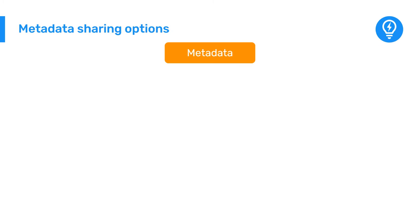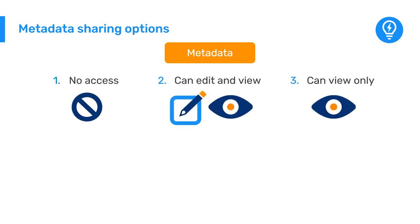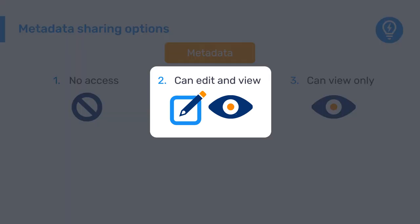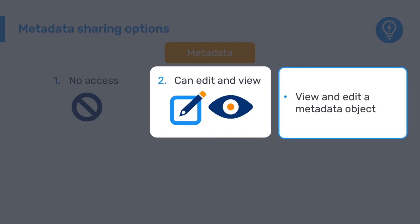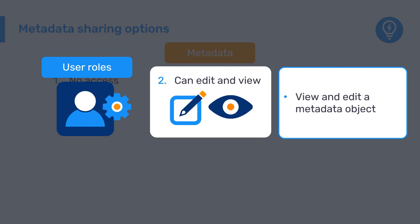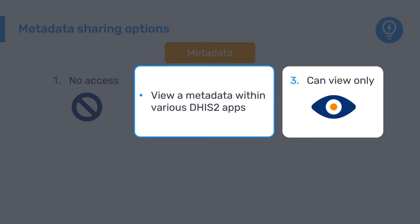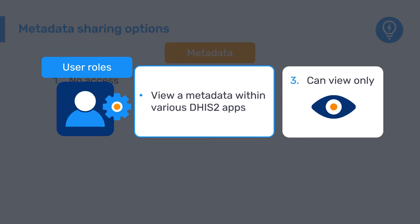Both metadata and data have individual sharing settings. For metadata sharing, there are three levels of access. The first is no access — users cannot see an object; this is applied through system-wide public access. The second is can edit and view, which allows users or user groups to view and edit a metadata object; they would also need access to the maintenance app via their user role. The third is can view only, which allows users or user groups to view a metadata object within various DHIS2 apps; user roles control which apps they have access to.